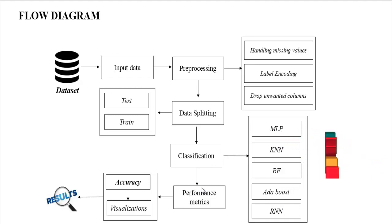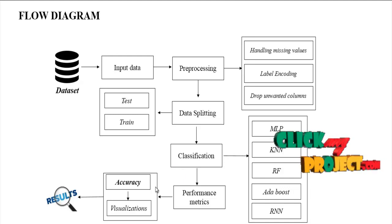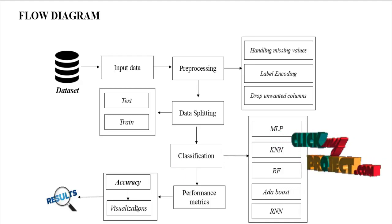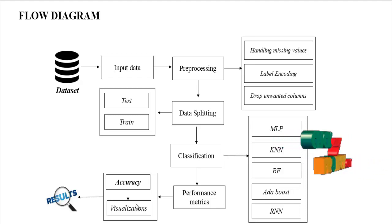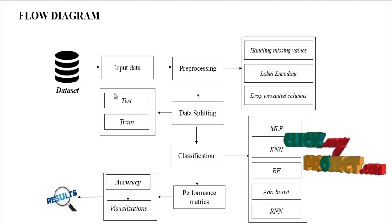Finally, we evaluate the performance metrics — that is, the result generation. We find accuracy for all of our mentioned algorithms, then visualize a comparison graph for all algorithms based on accuracy, and then predict the results. This is the flow of our process.